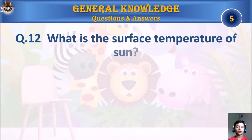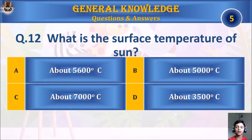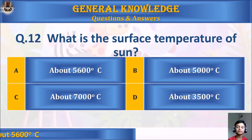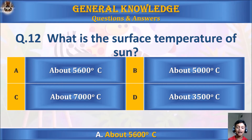Question 12: What is the surface temperature of the Sun? A. About 5,600 degrees Celsius, B. About 5,000 degrees Celsius, C. About 7,000 degrees Celsius, or D. About 3,500 degrees Celsius. Your time starts. The answer is A. About 5,600 degrees Celsius.